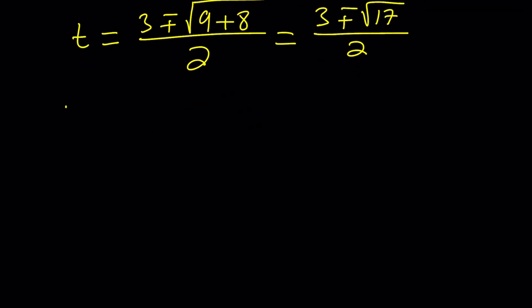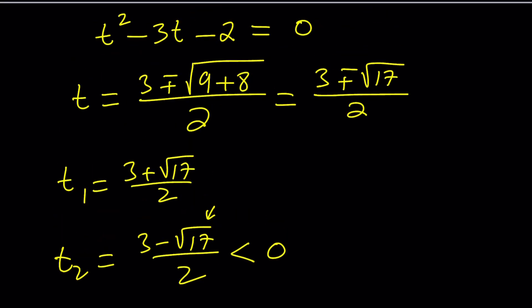Negative b plus minus the square root of b squared minus 4ac, but that's just going to give you an 8, divide by 2. So t would be 3 plus minus the square root of 17, divide by 2. Now let's go ahead and write these values separately. t sub 1, 3 plus root 17 over 2, and t sub 2, 3 minus root 17 over 2. Now it's important to write these separately so you can see clearly what they look like. Square root of 17 is greater than the square root of 16, which is 4. So this is greater than 4, and if you subtract it from 3, you'll get a negative answer.